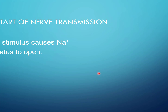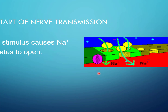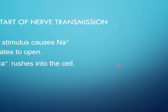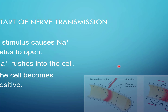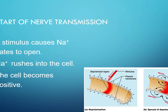The start of a nerve transmission: the stimulus causes sodium gates to open. The stimulus happens, and sodium gates in the cell membrane open up. Sodium rushes into the cell through these sodium gates. When this happens, the cell becomes positively charged — the inside becomes momentarily positive in just one spot. That causes sodium gates adjacent to that gate to open, and they become positive also.